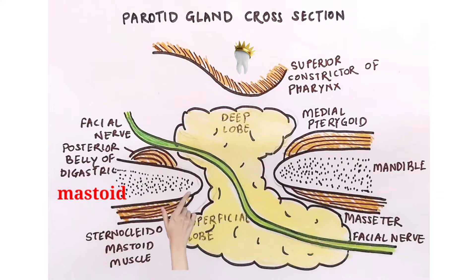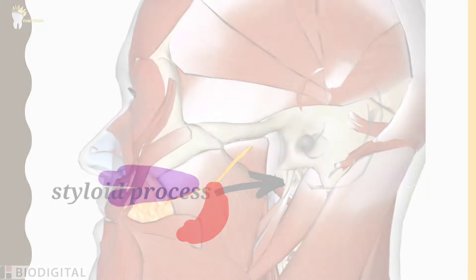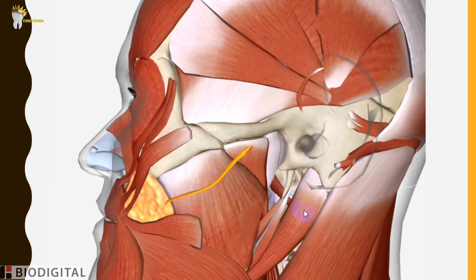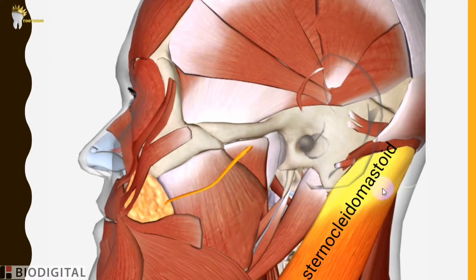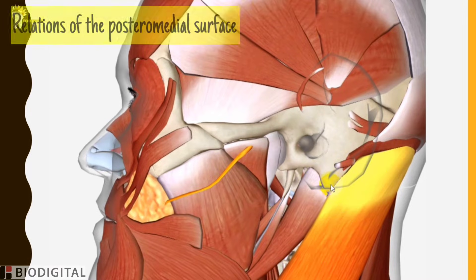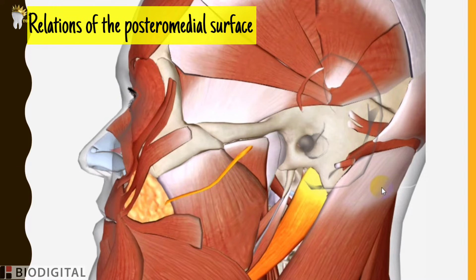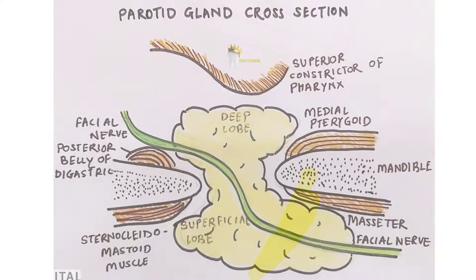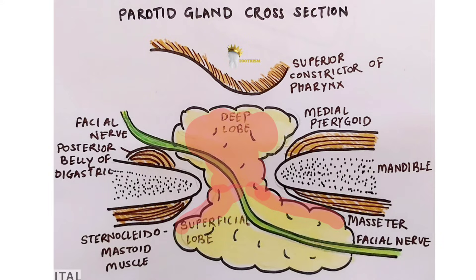The posteromedial surface is grooved by the mastoid process, sternocleidomastoid muscle, posterior belly of digastric, and styloid process. Removing the parotid gland in the 3D model reveals these structures underneath. The anteromedial and posteromedial surfaces meet at a medial margin, which projects so deeply that it contacts the lateral wall of the pharynx.